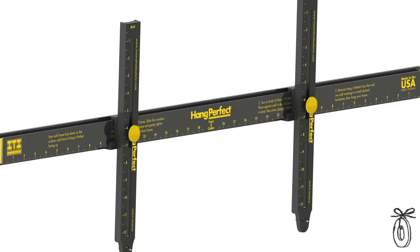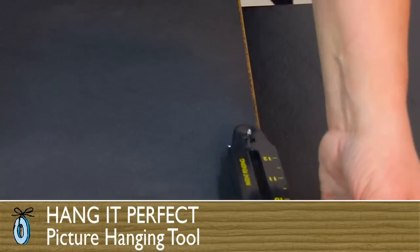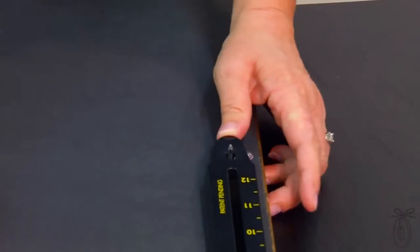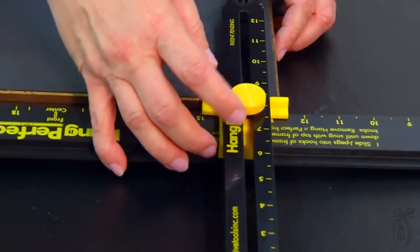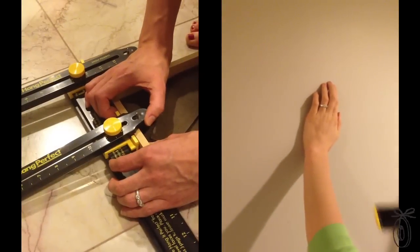It's very precise and easy to use, and it'll work regardless of how the picture is designed to be hung on the wall. Some of them have wires, some of them have little eye hooks that need two points of contact with the wall.